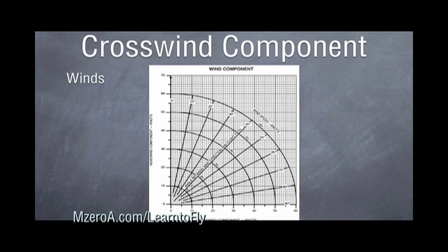the winds are 290 at 20 knots, and we're using runway 27. So this line on the left — let's pretend that that's runway 27. The winds are from 290, so that's 20 degrees off. We go over to the right to the 20 degree line, which you can see that arrow shows.